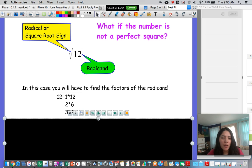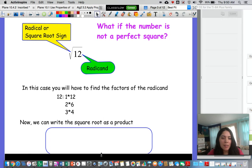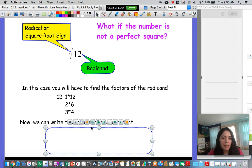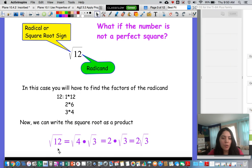So we will write this as the square root of 12 is equal to the square root of 4 times the square root of 3. Well the square root of 4 is just 2. So now we have 2 times the square root of 3 and we just write it as 2 square root of 3.